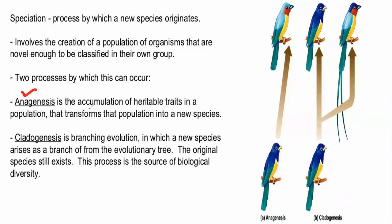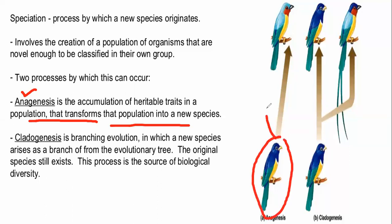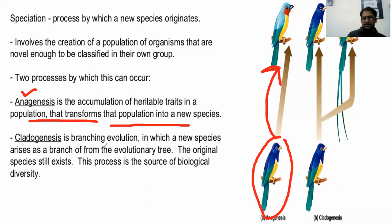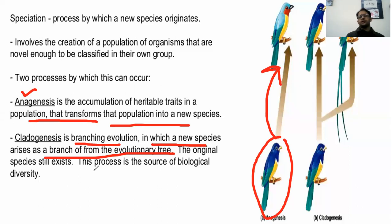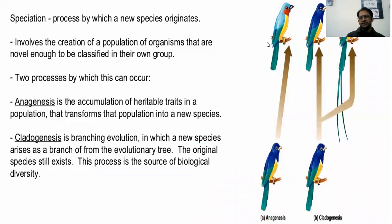One basic process is the accumulation of heritable traits in a population that transforms that population into a new species. In cladogenesis, a new species arises as a branch on the evolutionary tree, and the original species still exists. This process drives biological diversity, which is why diversity is increasing.